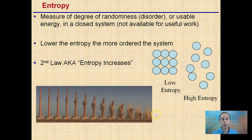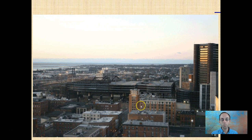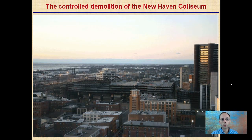High entropy is going to have a high amount of randomness — it's disorganization, it's disorder. You see that low entropy progressing to an area of high entropy. The second law of thermodynamics refers to entropy increasing. So again: low entropy is nice and organized; high entropy is very random.